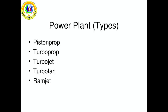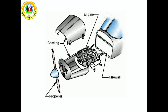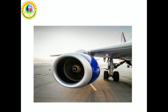There are mainly five types of engines used in an aircraft: piston prop, turbo prop, turbojet, turbofan, and ramjet. These are the basic components of the power plant. In simple terms, an aircraft power plant is an engine made up of many components such as cylinders, pistons, and fans, which help produce the energy needed to propel an aircraft. The power plant may be a jet engine or a combination of propellers and an engine.